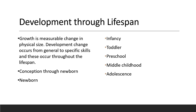For prenatal development, conception to birth takes an average of 38 to 40 weeks, and it is divided into three specific periods: the zygote, the embryo, and the fetus. The zygote begins with conception and lasts about two weeks. The embryo is the third week after conception and lasts until the end of the eighth week. The fetal period is the ninth week and ends with birth.